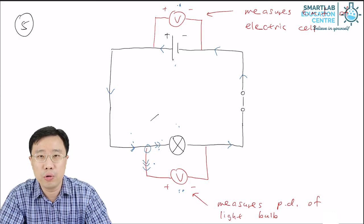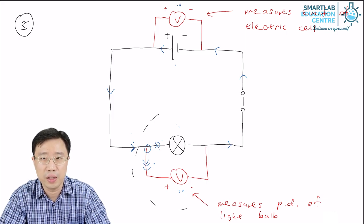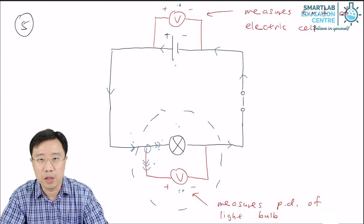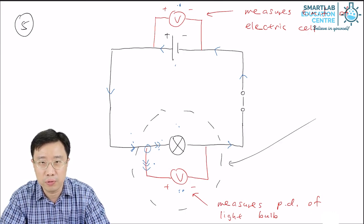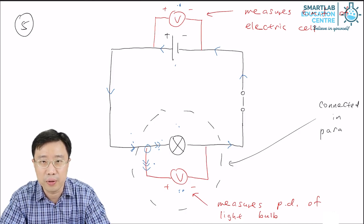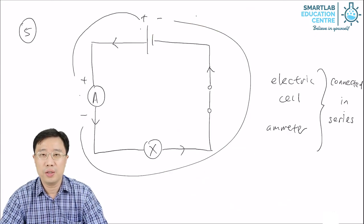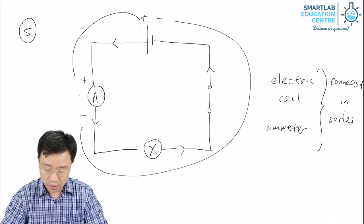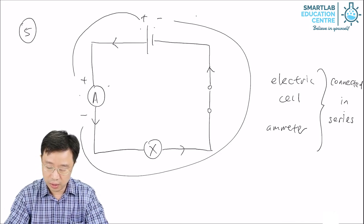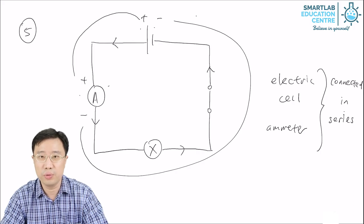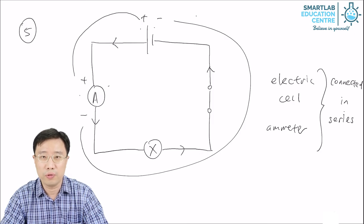When two circuit components are connected in such a way that there is more than one way for current to flow, we say that they are connected in parallel. This is in contrast to what we discussed earlier — the electric cell and the ammeter are connected in series, because there is only one way for current to flow through the two of them.